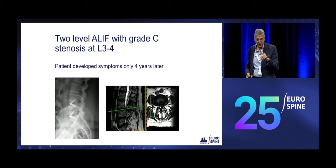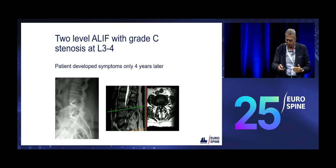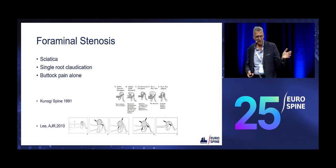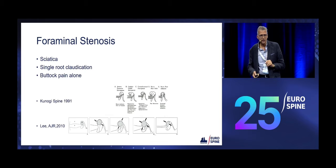This is a case I inherited. The patient had two-level ALIF and at the time of surgery she had a grade C stenosis above. The surgeon didn't decompress her — I only got her four years later. This grading does not address isolated recess stenosis and foraminal stenosis. Foraminal stenosis gives you sciatica and single root claudication. Several patients I've seen with foraminal stenosis only complain of buttock pain — that's quite an interesting finding.